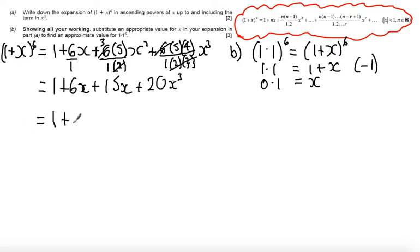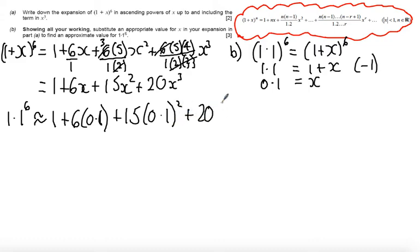I'm going to substitute x equals 0.1 into my expansion. So I get 1.1 to the power of 6, and let's change these because, technically speaking, I should have an approximation sign. Because it's not going to be exactly 1 plus 6 lots of 0.1 plus 15 lots of 0.1 squared plus 20 lots of 0.1 cubed.